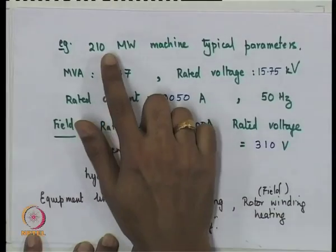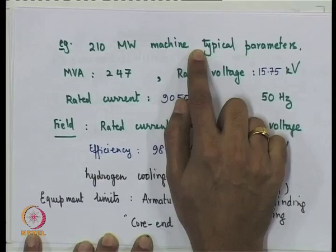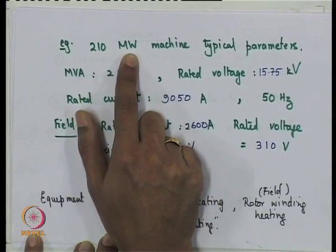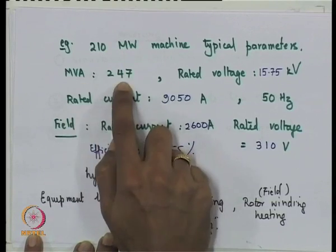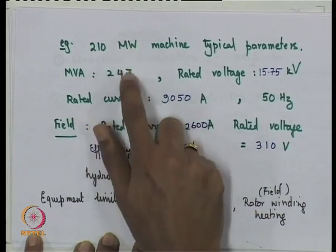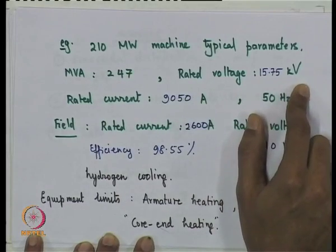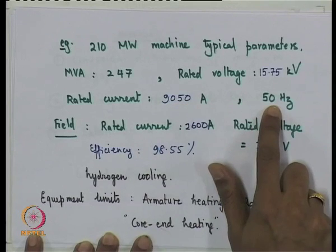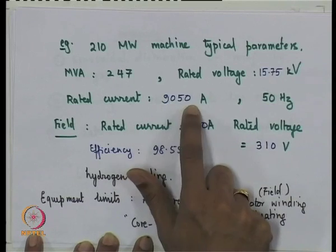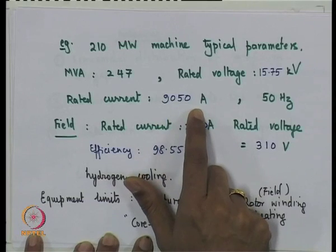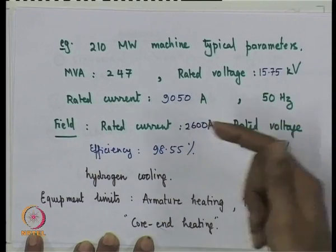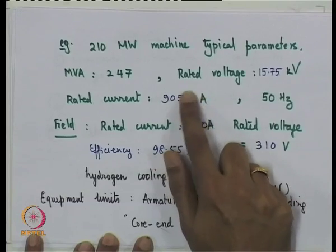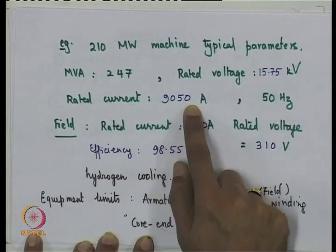Consider a typical 210 megawatt generator used extensively in the Indian power grid. Its MVA rating is 247, rated voltage is 15.75 kilo volts, and rated current is around 9050 amperes — that is the maximum continuous rating of the armature current. It is a 50 Hz machine. While short-term overcurrents of 10 to 15 percent are tolerable for about 10 to 15 minutes, the maximum continuous rating is around 10 kilo amperes. Due to heating, a machine like this is cooled by hydrogen.